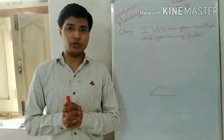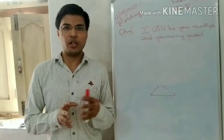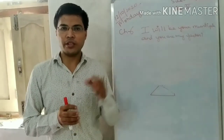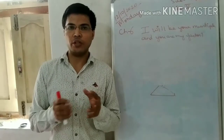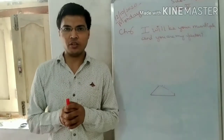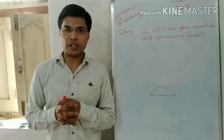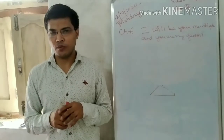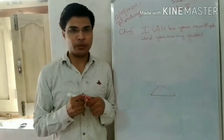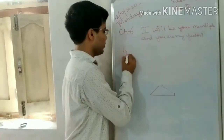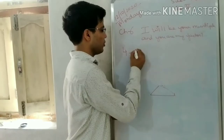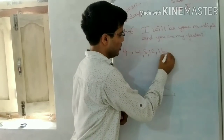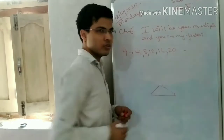So in this video we will discuss chapter number 6, that is 'I will be a multiple and you will be a factor.' In this chapter we discussed in the last class how to find the multiple of any number. For example, if you find the multiple of 4, you will simply write the table of 4: 4, 8, 12, 16, 20 and so on.